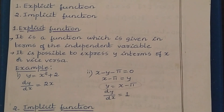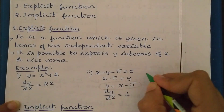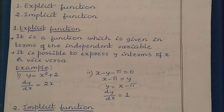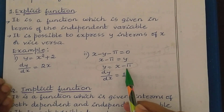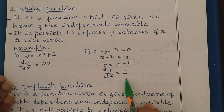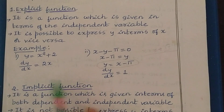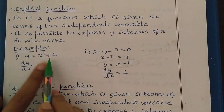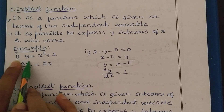We can express y in terms of x, or we can even express x in terms of y — you can write x is equal to y plus π. So one variable can be expressed in terms of another variable. Such kind of functions we call explicit functions, and you can differentiate these easily. If I differentiate y = x minus π with respect to x, we get dy/dx is equal to 1, since π is a constant giving 0.